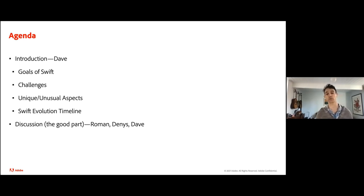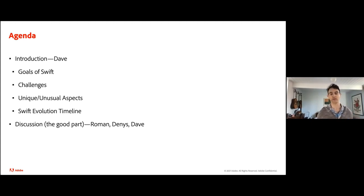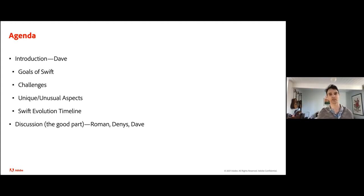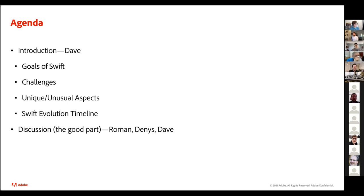Dave explains his deep involvement with programming languages came mostly from discovering the Standard Template Library of C++, and noticing it lacked exception safety. He was foolish enough to email Alex Stepanov suggesting he knew how to solve it. Stepanov told him to go talk to the committee, which was busy and behind schedule — but this launched a long, many-year journey through language and library design starting with the C++ committee.